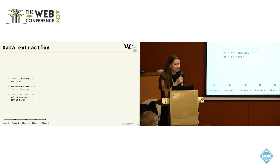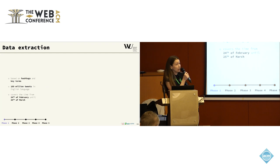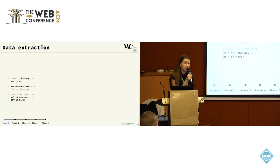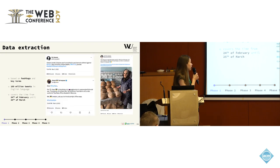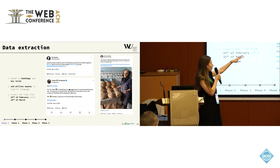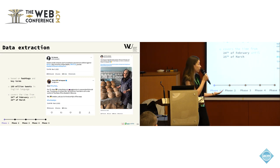We extracted data based on hashtags and key terms, leading us to 189 million tweets in English. We cover the initial phase of the Ukraine war — the first month. Here are some example tweets. As you can see, very popular hashtags were used, such as #StandWithUkraine, #StopPutin, and #StopRussia.